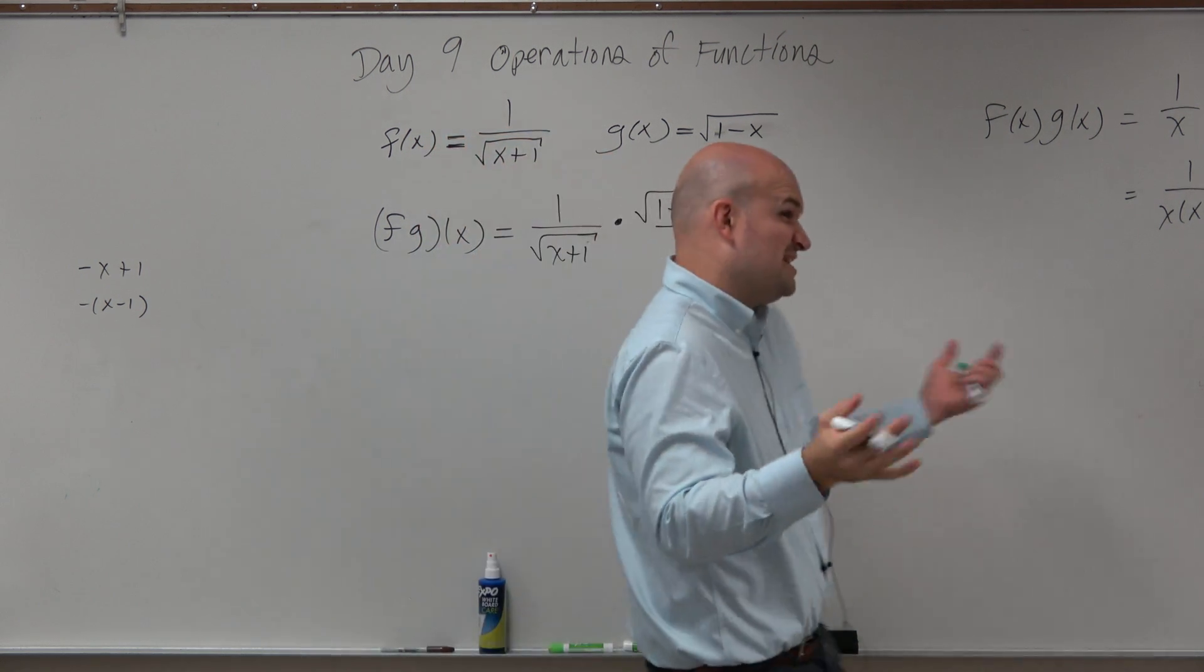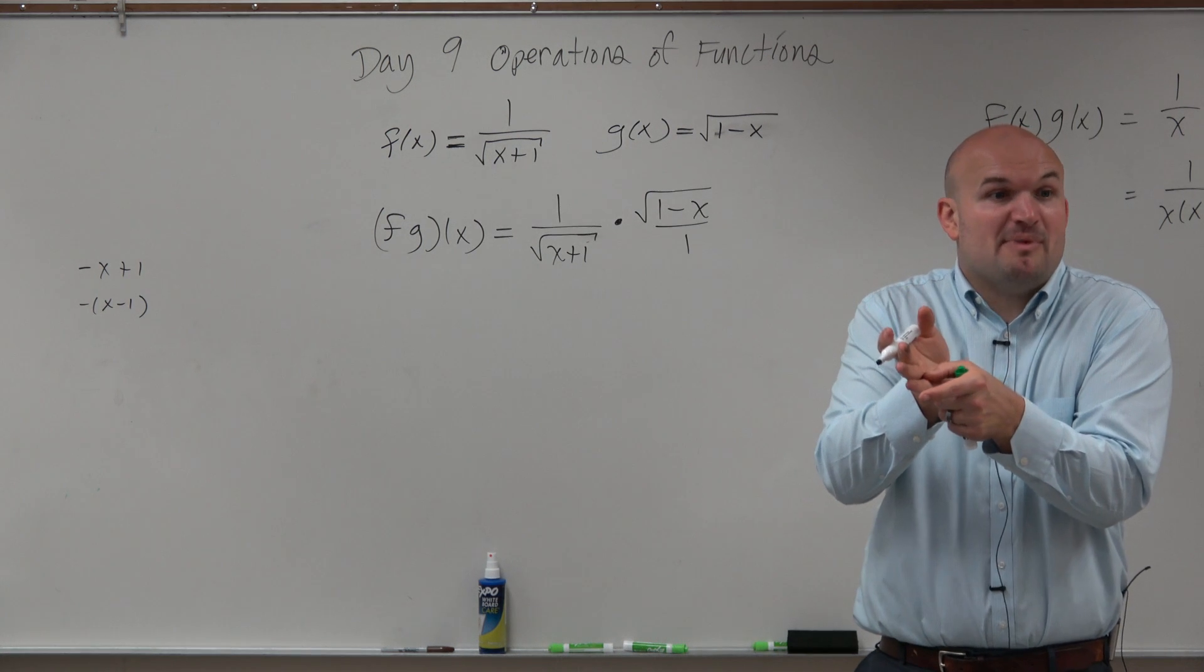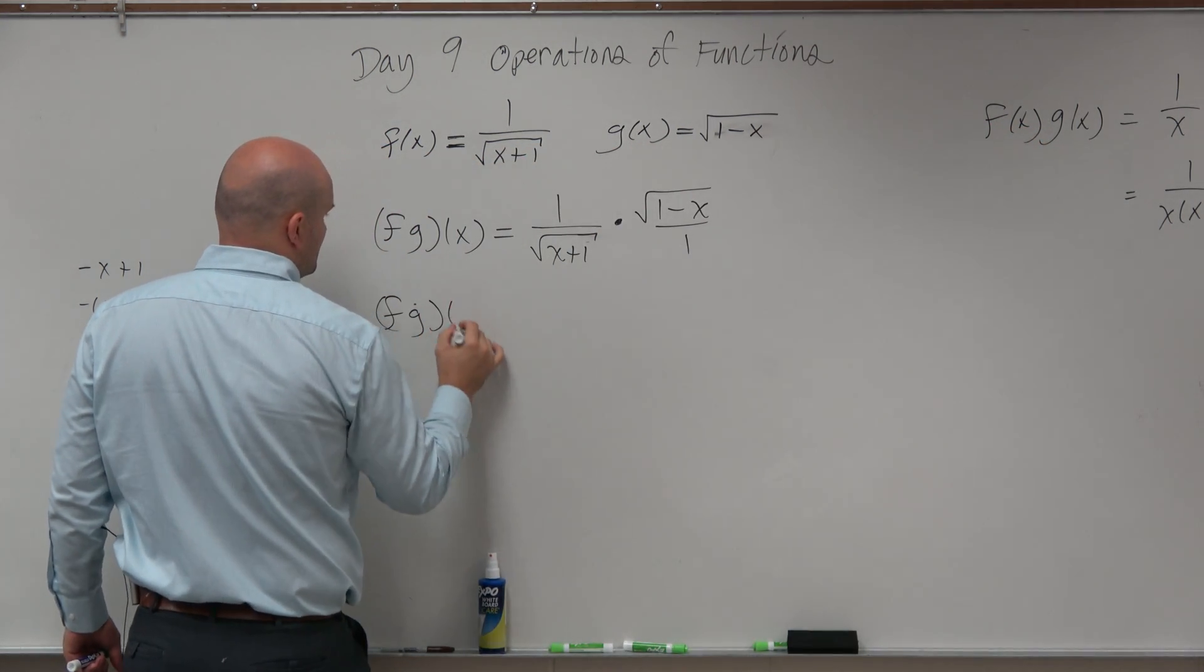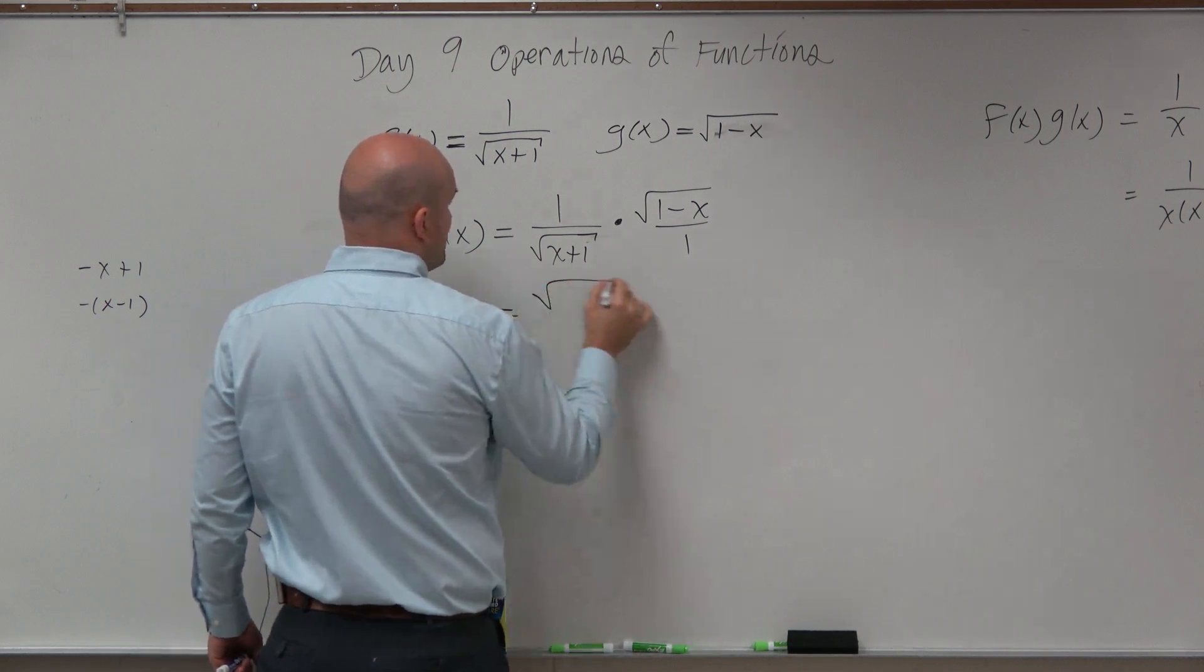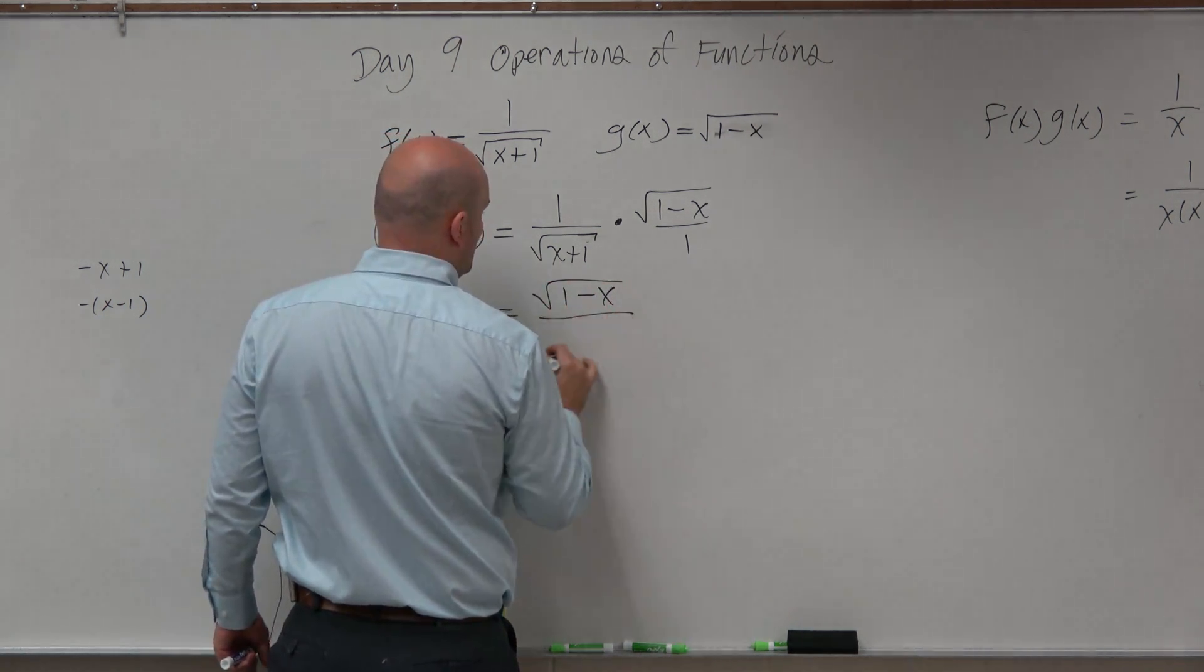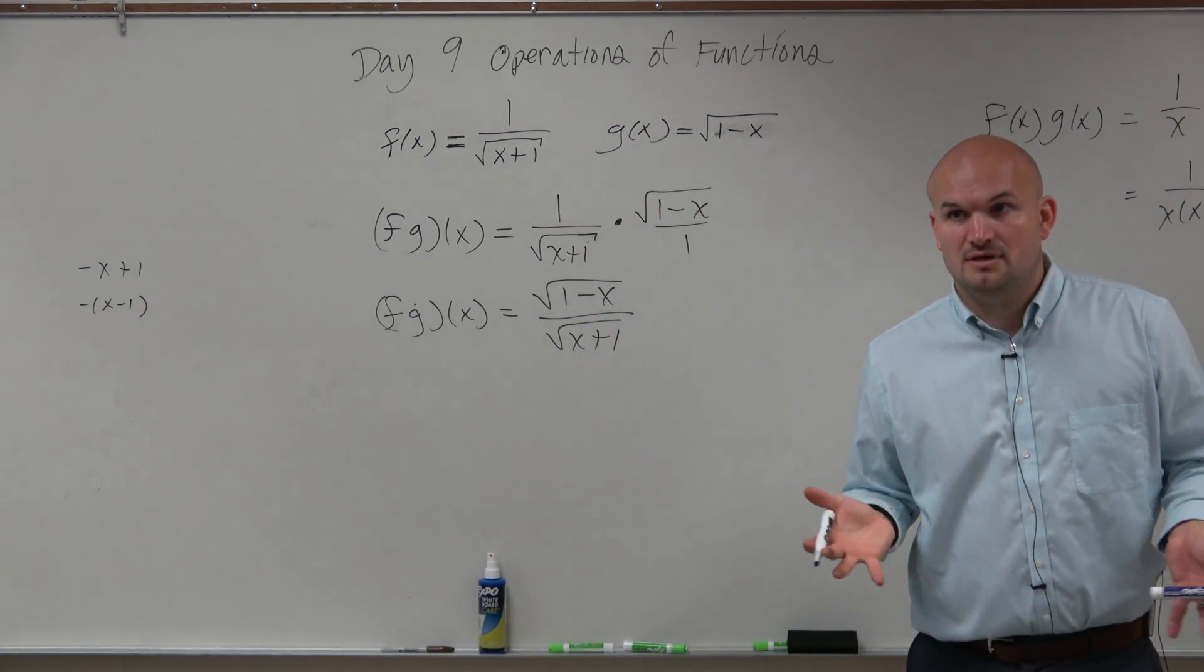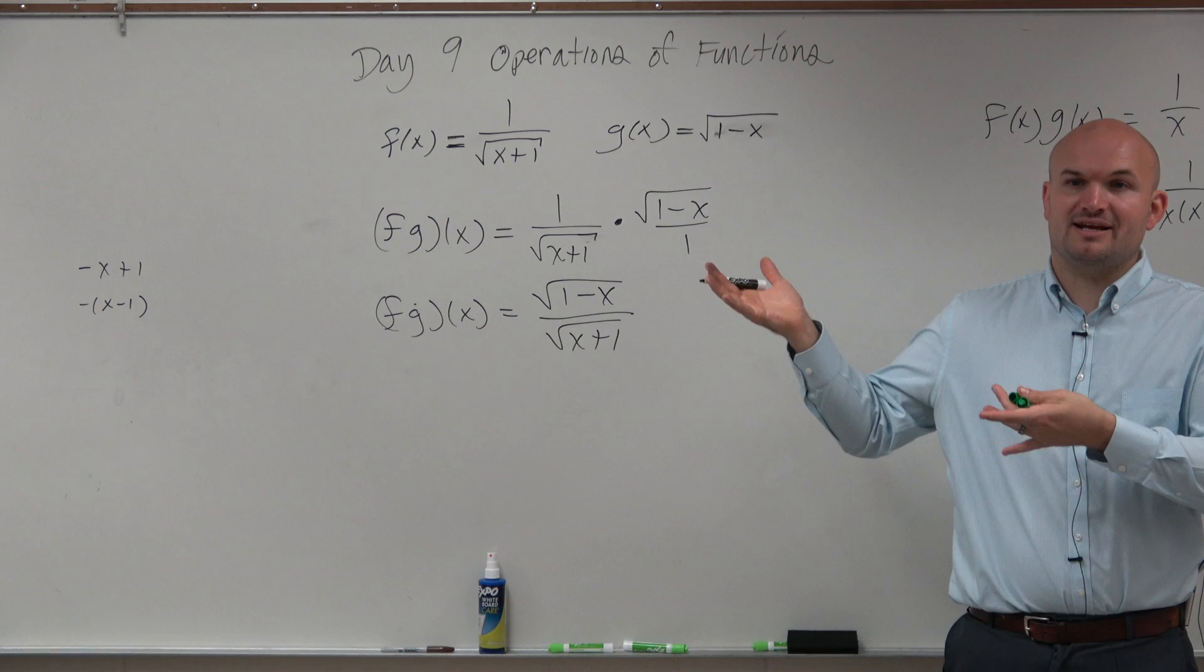That's really over 1. Since we're multiplying over 1, we can combine them into one function. So f of g of x equals the square root of 1 minus x all over the square root of x plus 1. That's the simplified answer.